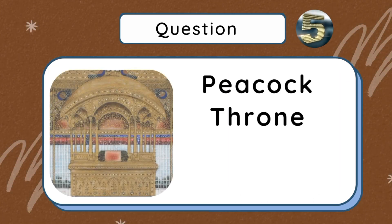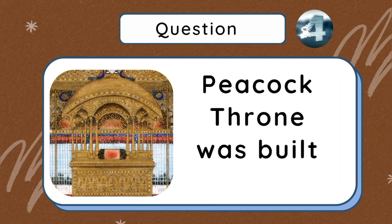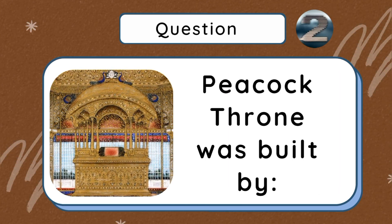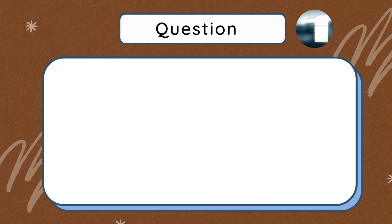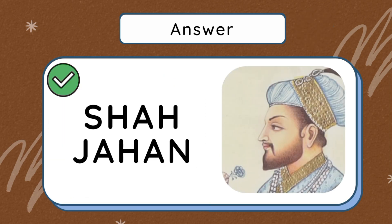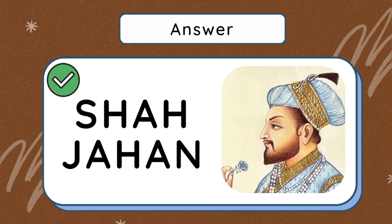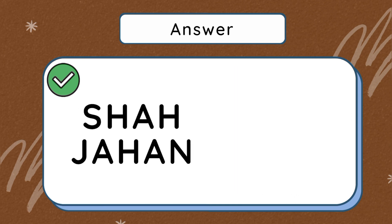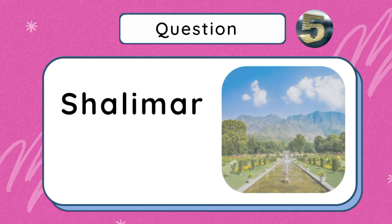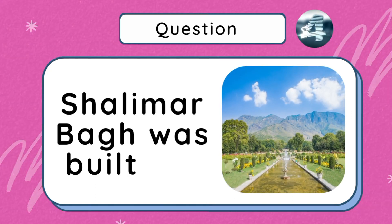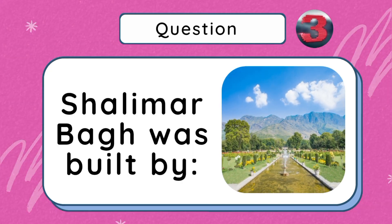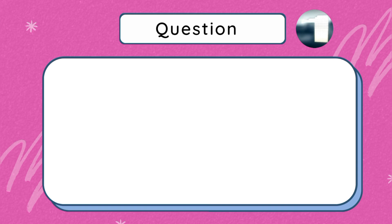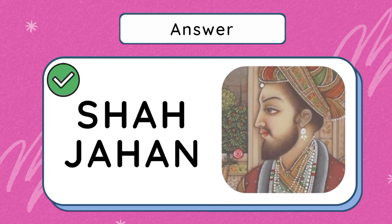Peacock Throne was built by Shah Jahan. Shalimar Bagh was built by Shah Jahan.